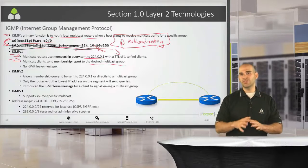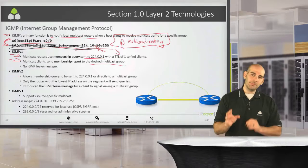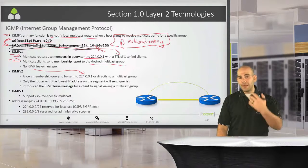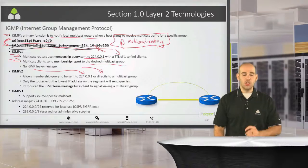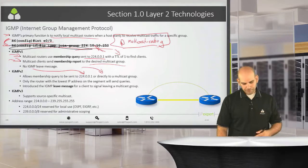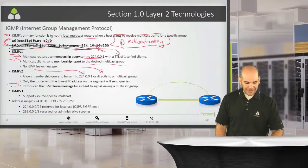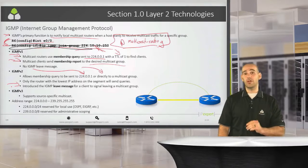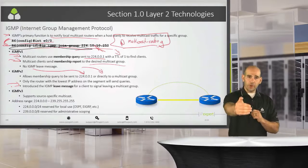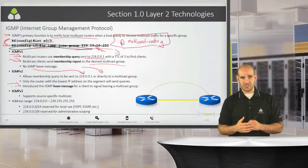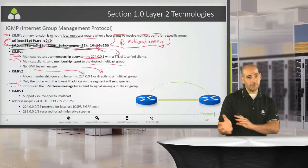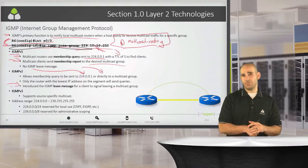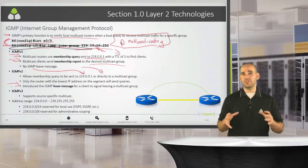Version 2 addressed these problems. IGMP version 2 allowed the membership query to be sent to either the group address 224.0.0.1 or directly to a specific multicast group. It also gave us the ability to send a leave message — so when I no longer want to receive multicast traffic, I can send a leave message to my query router. That router then removes the entry from the MRoute table and stops sending me that traffic.